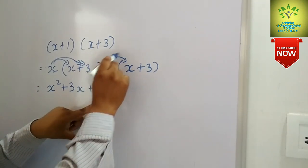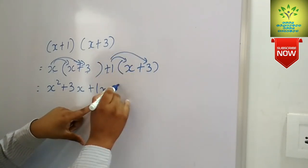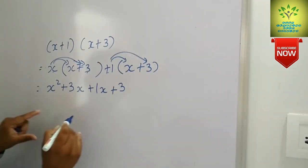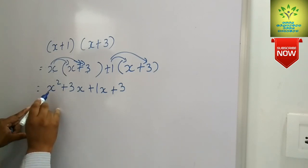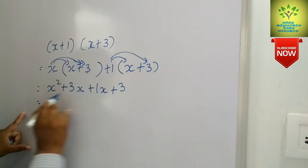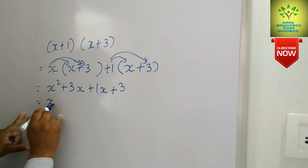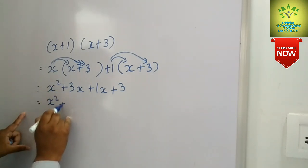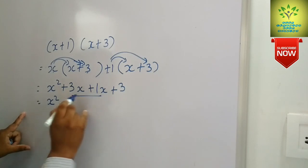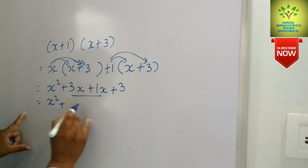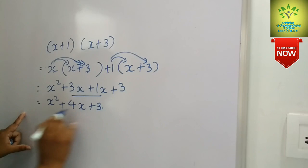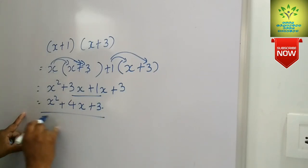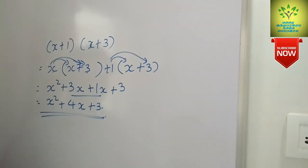Both numbers are plus, so plus 1 times x is 1x, and 1 times 3 is 3. So the next step gives us x squared plus 3x plus 1x, which is 4x, plus 3. So this is the answer: x squared plus 4x plus 3.